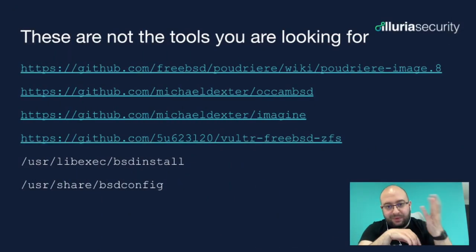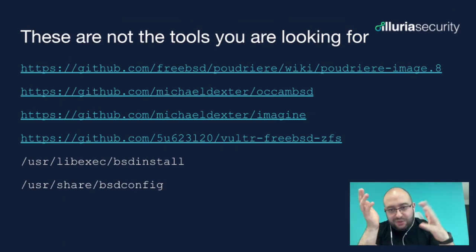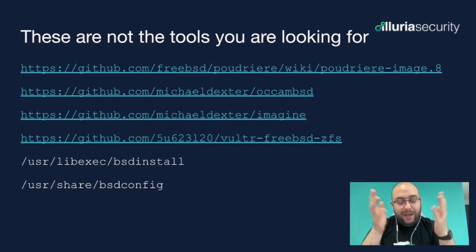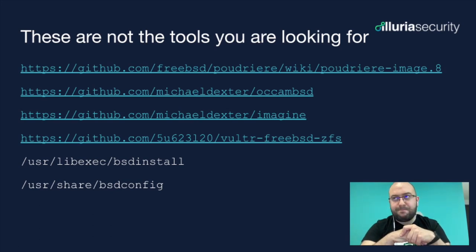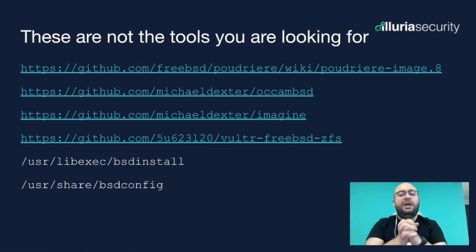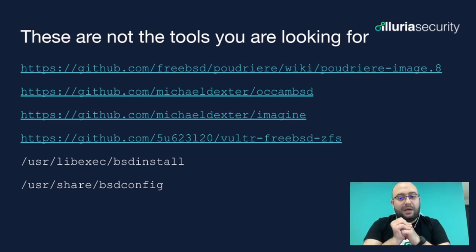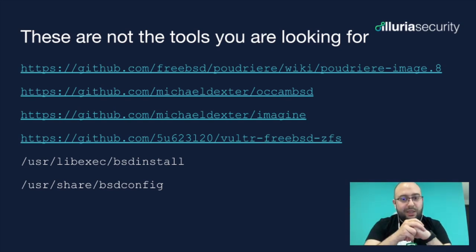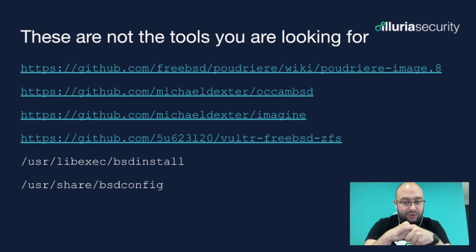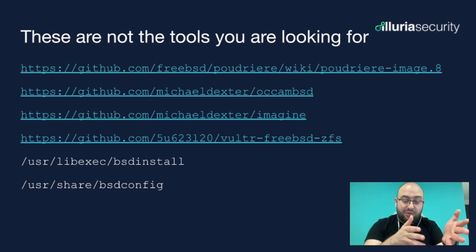Before moving forward, here are some links to GitHub pages, repositories, and man pages that would be helpful. The first is Poudriere image's man page. The next two are: allonbsd by Michael Dexter, to make a minimalistic FreeBSD image that you can learn a lot from by reading and contributing to the code; and imaginate, which makes custom FreeBSD images. There's also a script by Moin that we've learned a lot from on how to make VM images — you can use it if you want to make ZFS images for Vultr, for example. Here are two paths to look into if you want to make your custom installer: the bsdinstall path and the bsdconfig path. Keep in mind that bsdinstall uses bsdconfig as its core, so you'll need to go back and forth to understand what the code is doing.